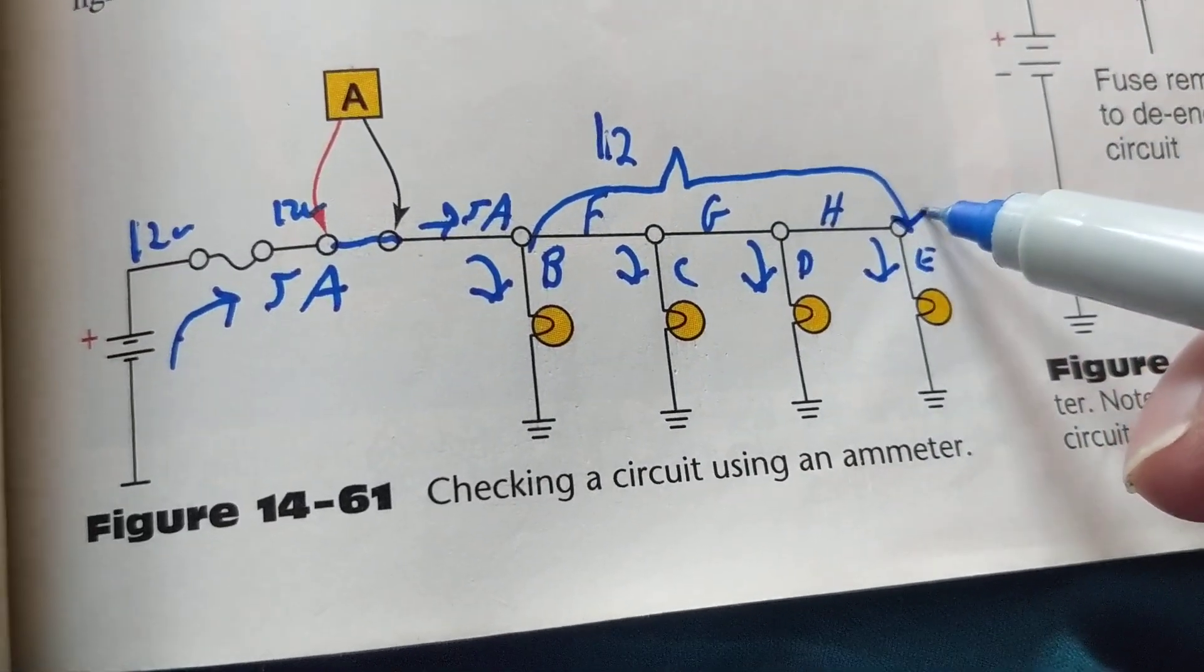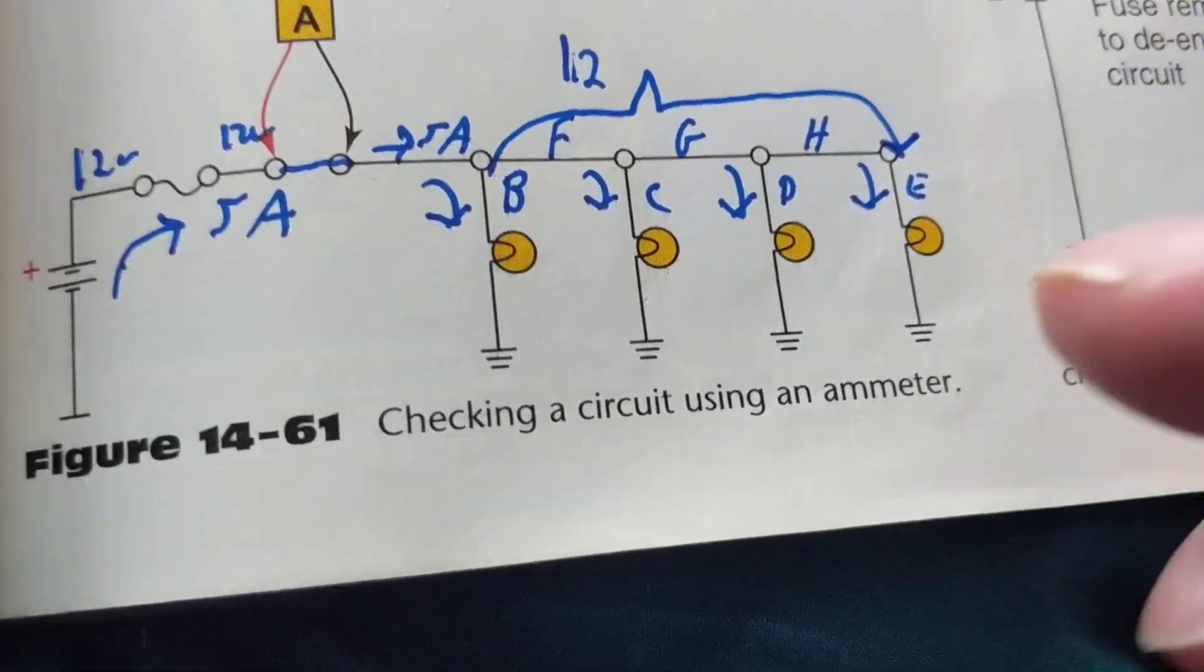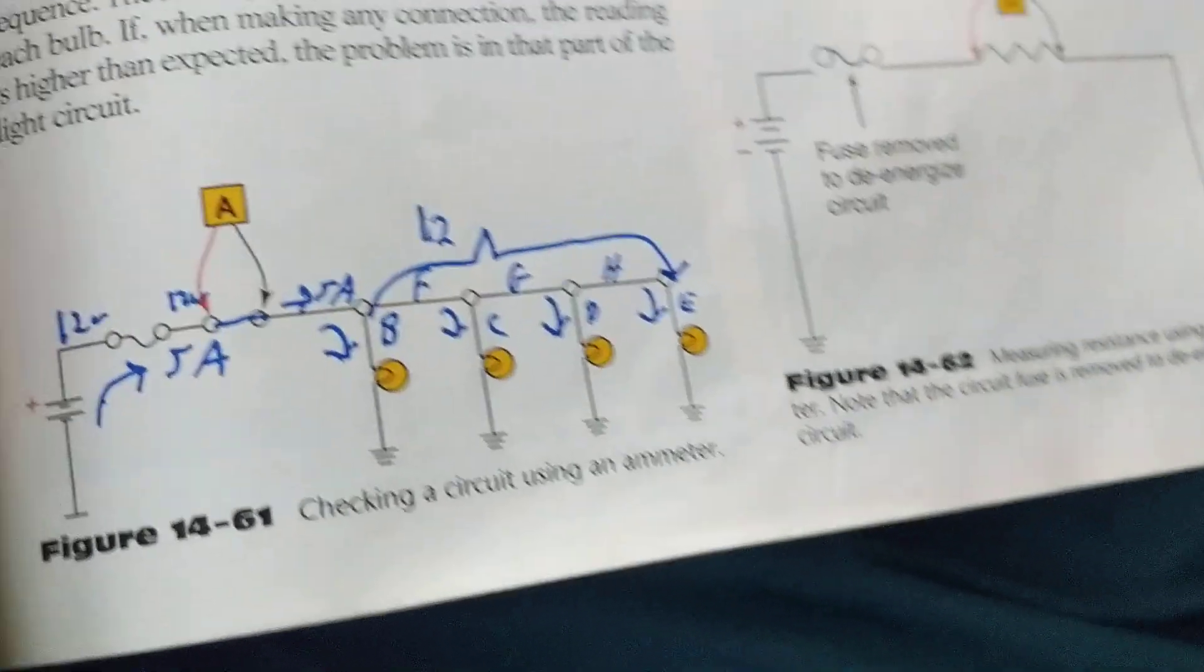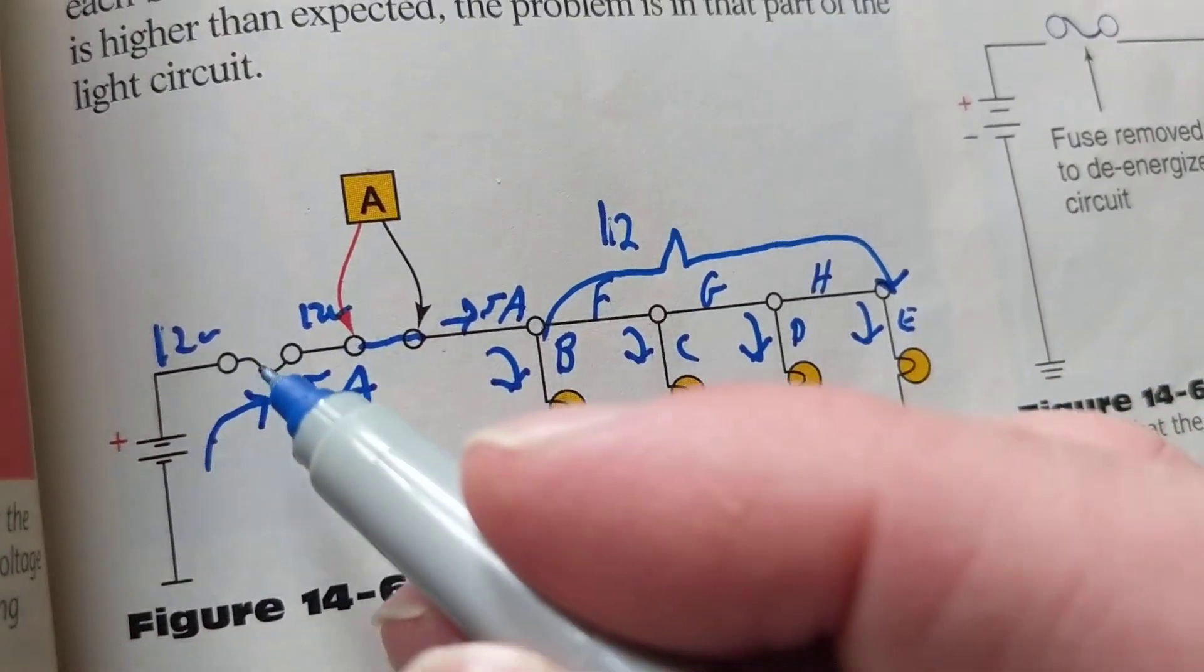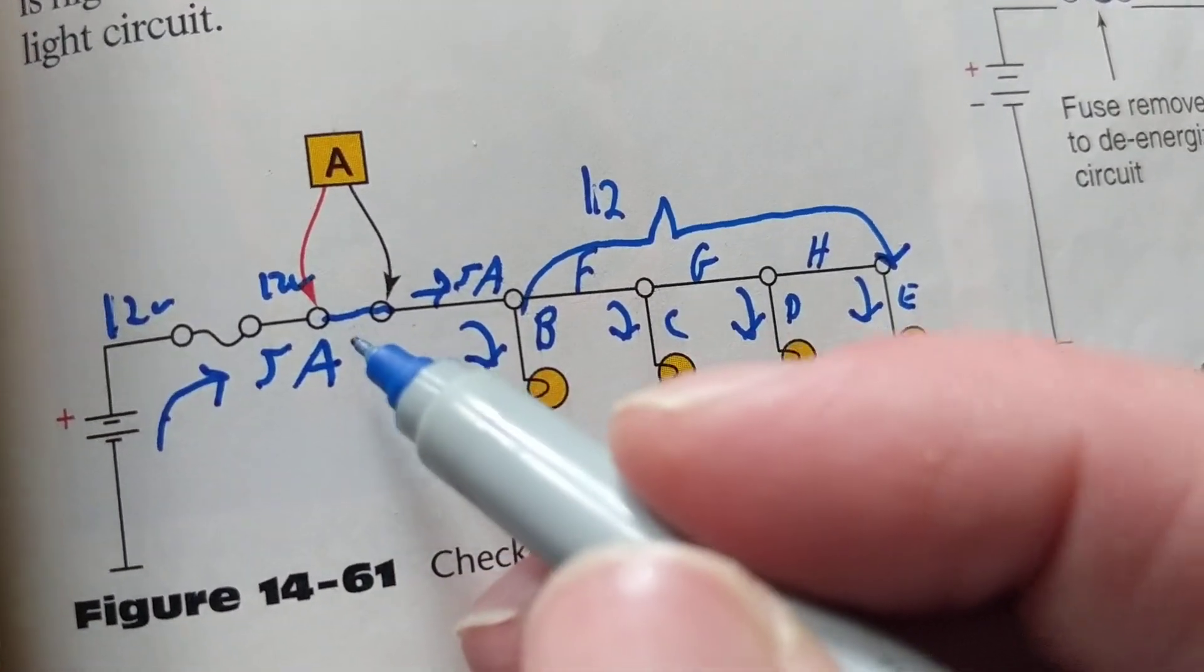12 volts. All your bulbs are out - you come in the morning and all your bulbs are out. What could be the common cause? If you're going to say the fuse, of course. If you're going to say the switch, of course.